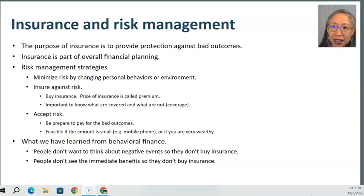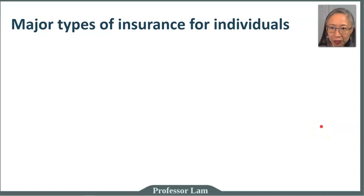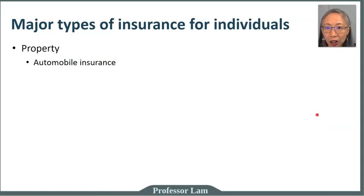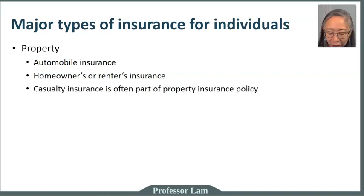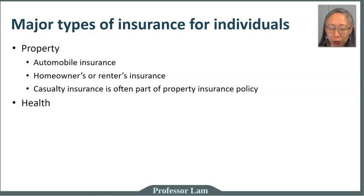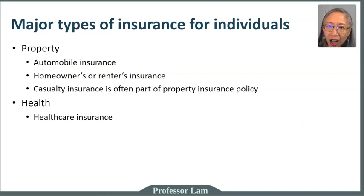The question is not whether you must buy insurance, but rather which risk management strategy is appropriate — are you accepting the risk knowing the consequences, changing your behavior to mitigate risk, or is buying insurance the best strategy? For most individuals, there are three major types of insurance encountered in daily life. The first is property insurance, which includes automobile insurance. If you take out a car loan, the lender will often require automobile insurance.